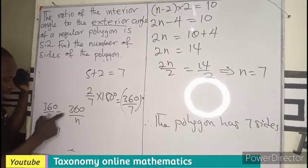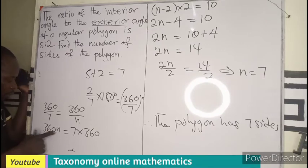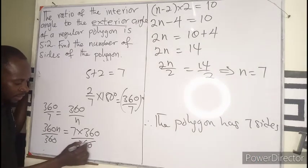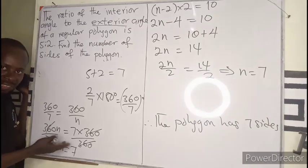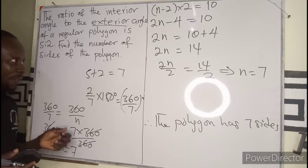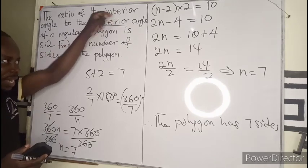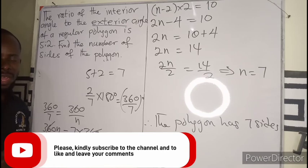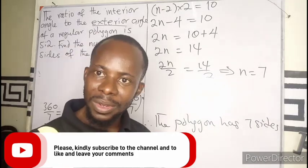Since exterior angle equals exterior angle, we have 360/7 = 360/n. Cross-multiplying: 7 × 360 = 360 × n. Dividing both sides by 360, n = 7, confirming the polygon has 7 sides. You could also use (5/7) × 180 to find the interior angle and equate it to the interior angle formula to get the same answer. I believe you have learned a thing or two.